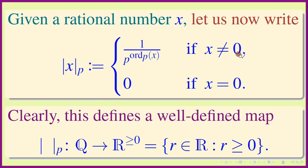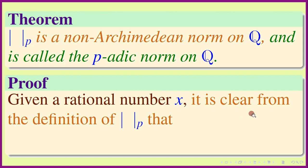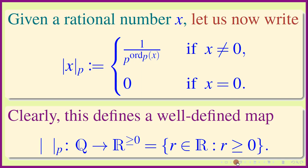For the trivial norm, non-zero quantities always map to 1 and 0 maps to 0. But here, if x is non-zero, this is not always equal to 1 — it depends on x. Proof: given a rational number x, it is clear from the definition that the p-adic norm of x is 0 if and only if x is 0.